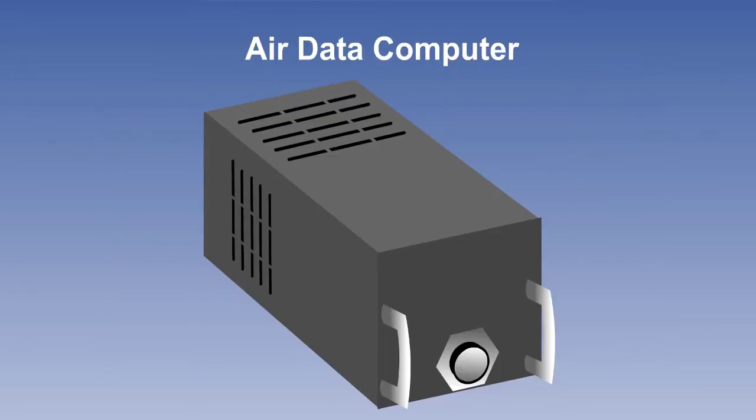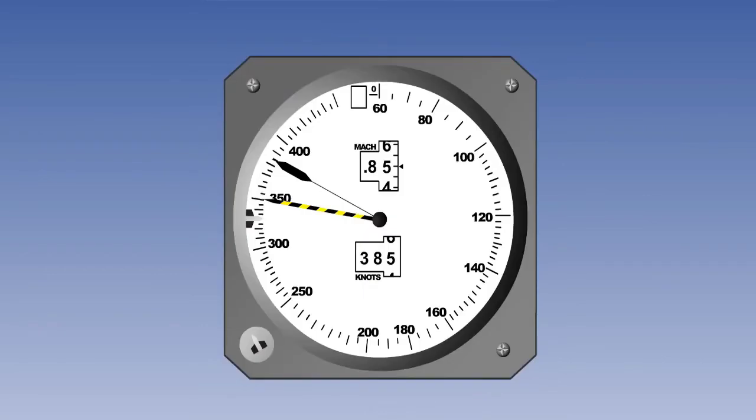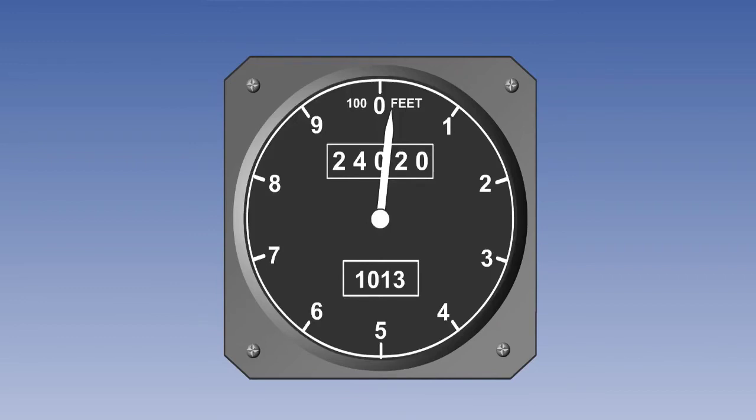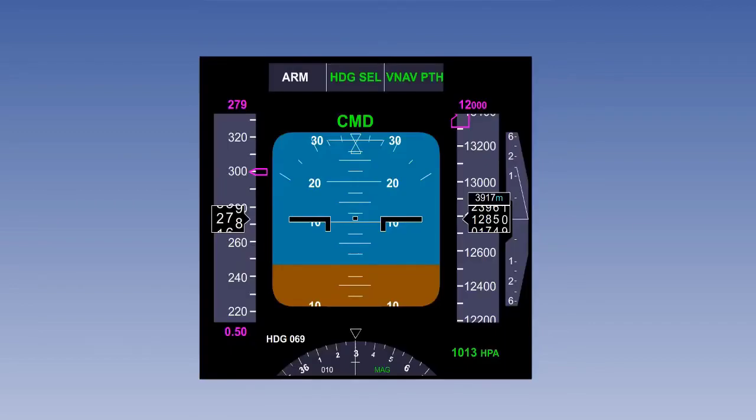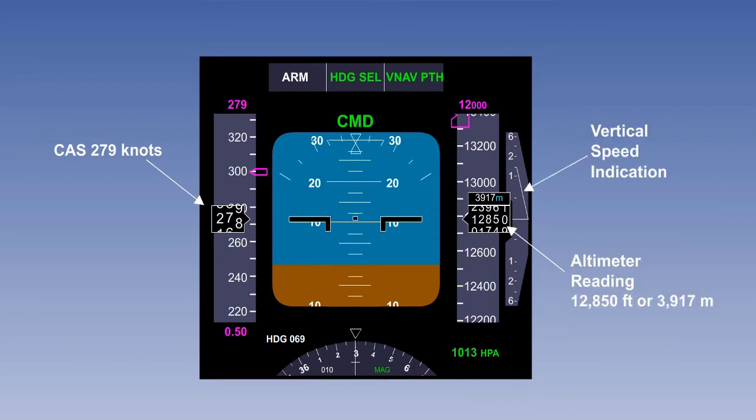The air data computer is used as a central source for many instruments and other systems. Older aircraft may have analog displays, even if the data is digital. They will include the airspeed and Mach number indicators, altimeters, and VSIs. More modern aircraft will have an electronic flight instrument display, or EFIS. Here you can see the electronic airspeed, altitude, and VSI readings.